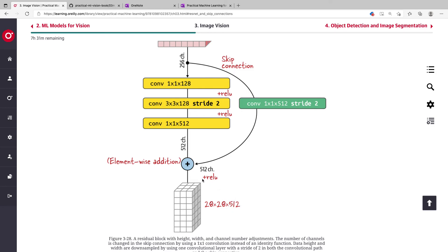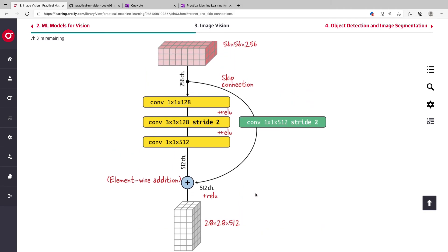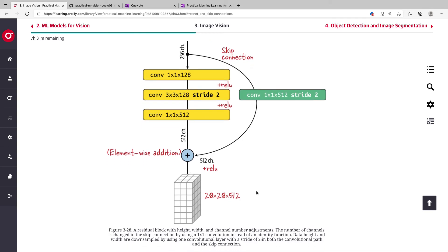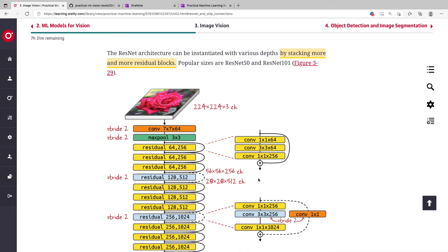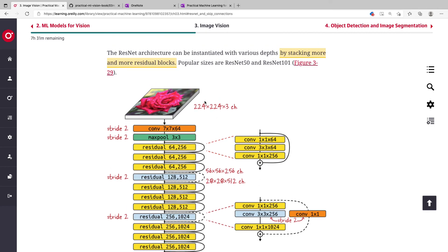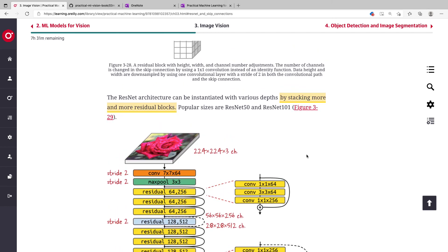That's that about skip connections. You can see the residual block itself. The 50 or 101 represent the number of layers by stacking more and more residual blocks, based on the number of depth that you have.